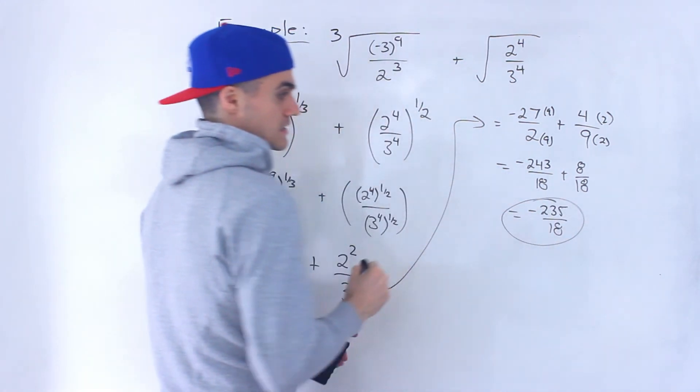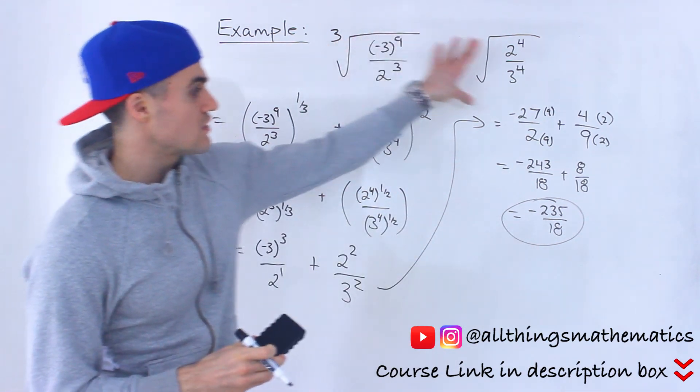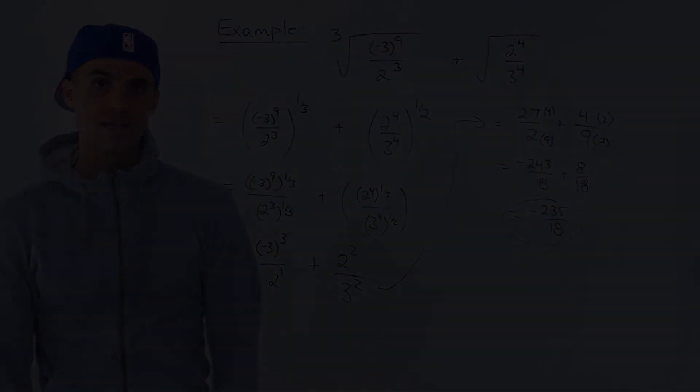And this doesn't simplify any further. So the answer to this is negative 235 over 18.